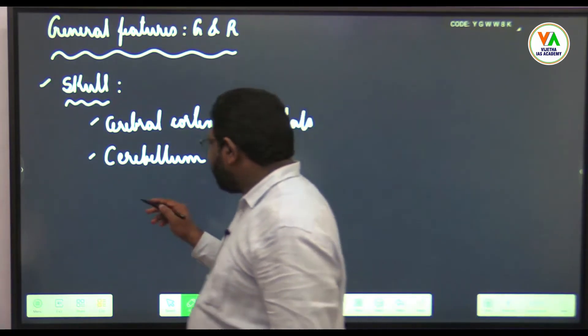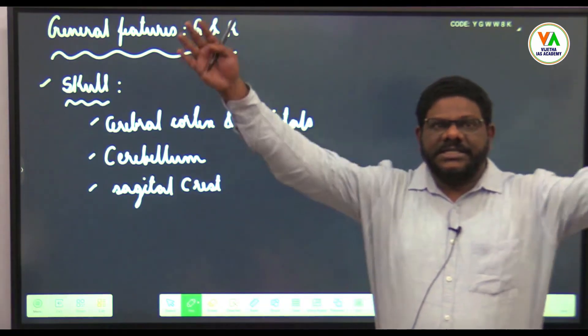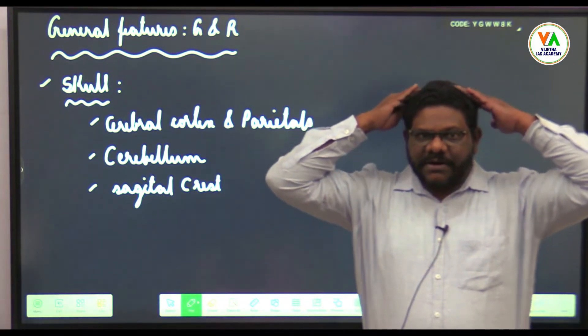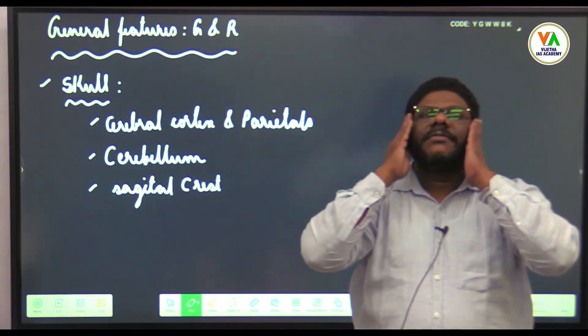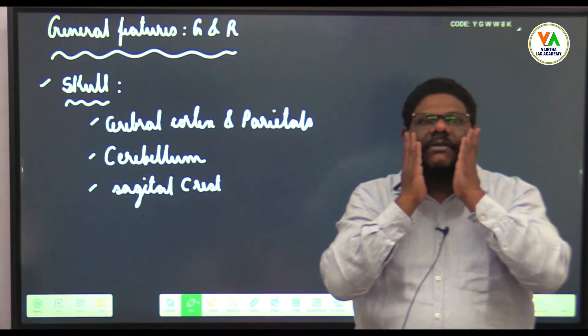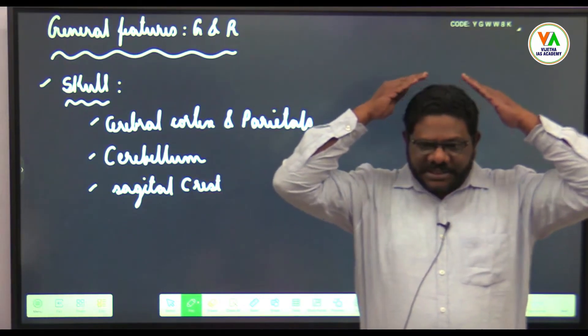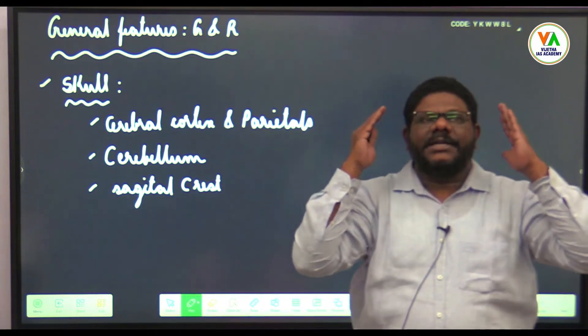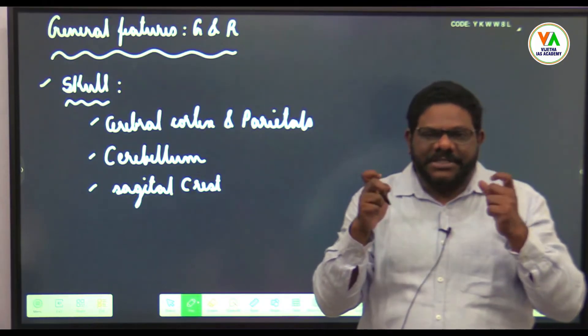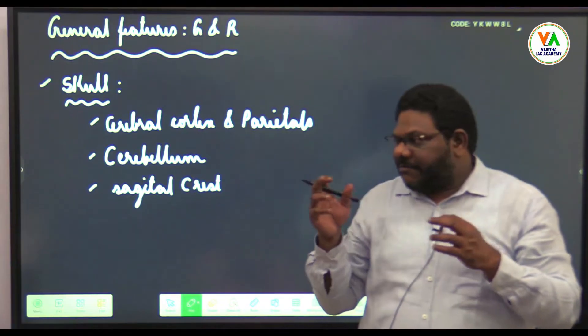Sagittal crest is well developed in humans it is reduced. Well developed sagittal crest indicates increased pressure brought by mastication or chewing. They are still having raw food—increased pressure while processing uncooked food, maybe leaves, bamboo, fruits, or nuts.